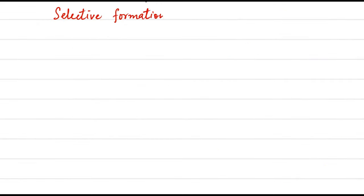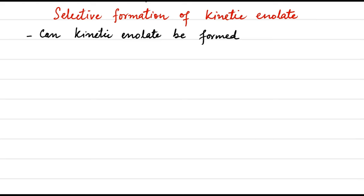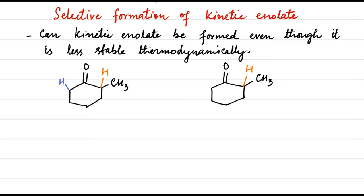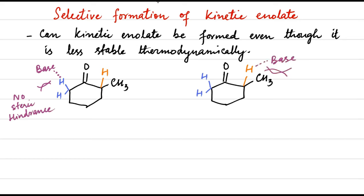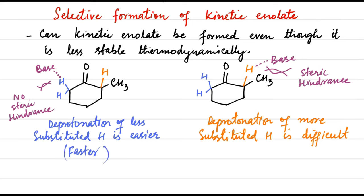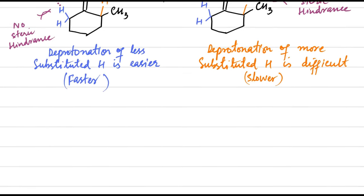A reasonable question remains: can the kinetic enolate be formed even though it is thermodynamically less stable? To understand this, consider the unsymmetrical ketone 2-methylcyclohexanone. The base encounters no or less steric hindrance for deprotonation of the less substituted alpha proton, whereas removal of the proton from the more substituted alpha position is hindered by steric bulk. Thus, deprotonation of the less substituted proton is easier and faster, whereas deprotonation of the more substituted proton is comparatively difficult and slower.